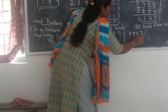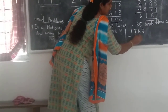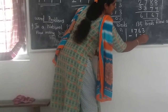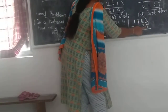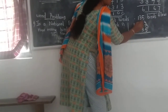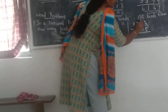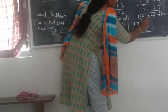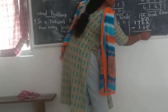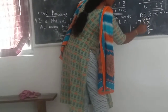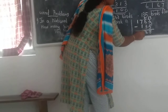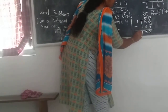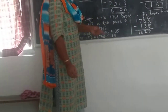Solving 1763 minus 135: ones place 3 minus 5, we borrow to get 13 minus 5 is 8. Tens place: 5 minus 3 is 2. Hundreds place: 7 minus 1 is 6. Thousands place: 1 minus 0 is 1. So the answer is 1628 birds are left in the park.